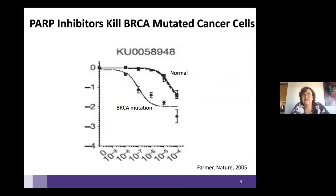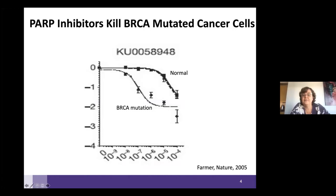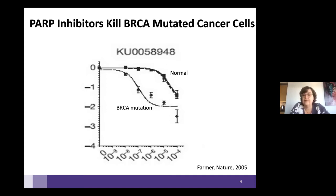These chemicals were discovered some time ago and were sitting on a shelf because they didn't have a lot of activity in cancer cells—until a breakthrough discovery about 15 years ago, when it was observed that in cancer cells with a BRCA mutation, these cells died readily when treated with very low doses of this inhibitor. This was published about 15 years ago and was a big breakthrough.